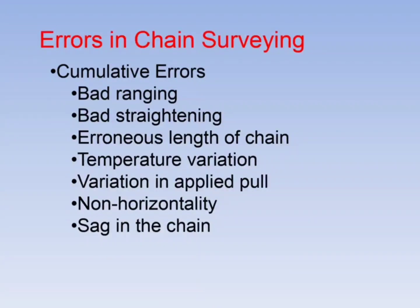Cumulative errors in chain surveying: Bad ranging, bad straightening, erroneous length of chain, temperature variation, and variation in applied pull. Due to bad ranging, more length will be measured. Due to error in the chain, the measured length may be positive or negative.